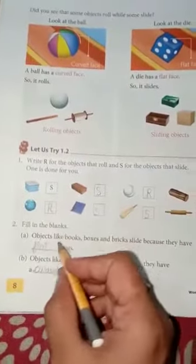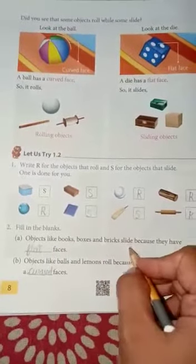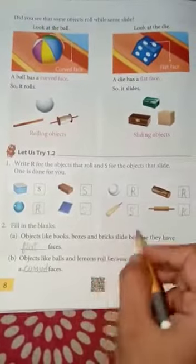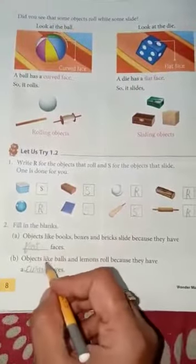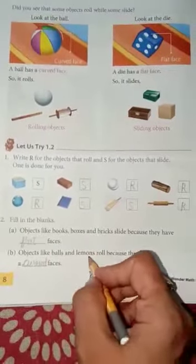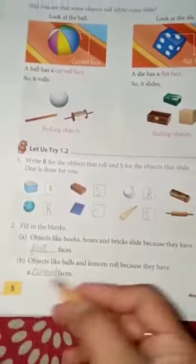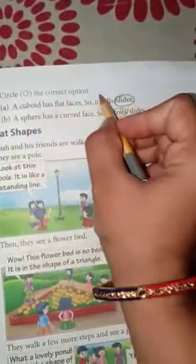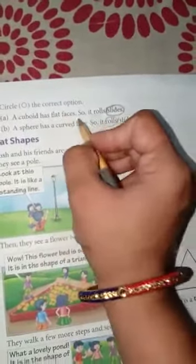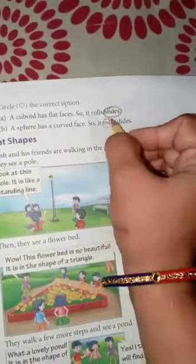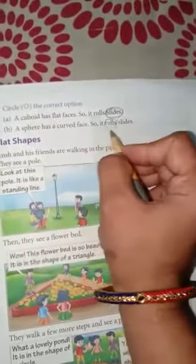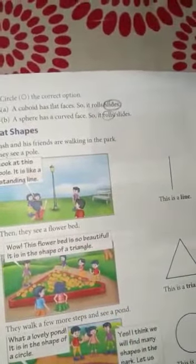Fill in the blanks. Objects like books, boxes and bricks slide because they have - slide kaun se hote hain, jinke flat faces hote hain. And objects like ball, lemon, roll because they have a curved face. Jo roll karti hai, unke faces kaise hote hain - curved. Next, circle the correct option. A cuboid has flat faces, so it rolls or slides. Agar flat faces hote hain, woh kya karti hai? Slides. A sphere has a curved face, so it rolls. Curved agar kisi ka face hai, toh woh roll karti hai.